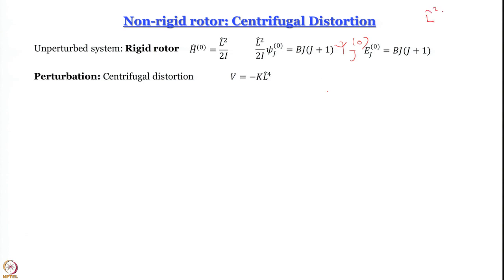To understand what L⁴ means: if L²ψ = aψ, then L⁴ψ = L²(aψ) = a·L²ψ = a²ψ. So L⁴ just means L² operating twice. This gives the eigenvalue of L⁴ as the square of the eigenvalue of L².